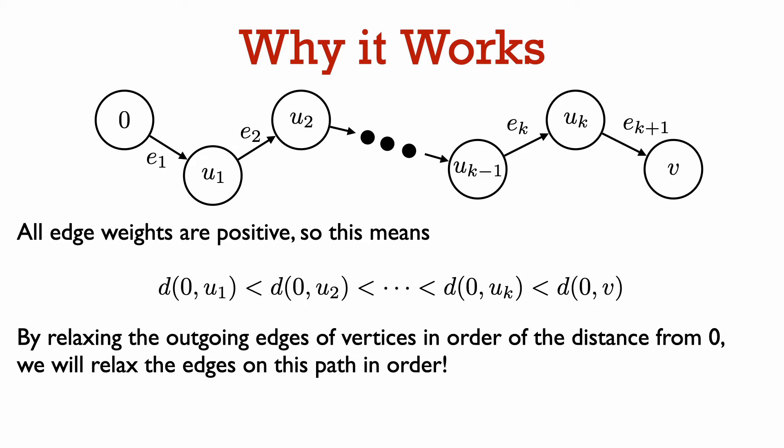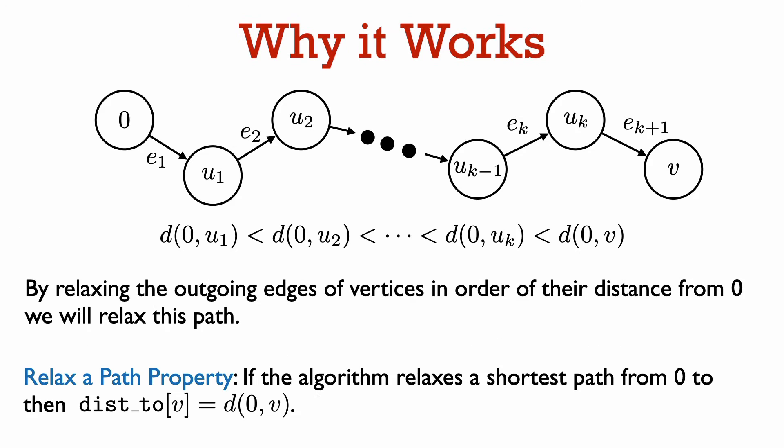So by processing vertices in order of their distance from 0 — whereby processing a vertex I mean relaxing all its outgoing edges — we will relax the edges of this shortest path in the proper order. In other words, Dijkstra's algorithm is guaranteed to relax this path. Therefore, we can apply the relax-a-path property to see that at the end of the algorithm, dist2 of V will equal the distance from vertex 0 to vertex V. And by invariant 2 of the generic template, tracing back using the edge-to array will give us a shortest path from vertex 0 to vertex V. This shows the correctness of Dijkstra's algorithm.